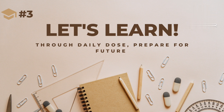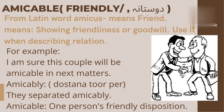The very first word is 'amicable,' means friendly — دوستانہ. This word is taken from the Latin word 'amicuous' meaning friend. Its meaning is: having or showing friendliness or goodwill. Use it when describing relations — this word 'amicable' is mostly used in the context of relations. For example: 'I am sure this couple will be amicable in next matters.' مجھے یقین ہے کہ یہ couple اب اگلے معاملات میں دوستانہ رہیں گے. Its family word is 'amicably' — دوستانہ طور پر.